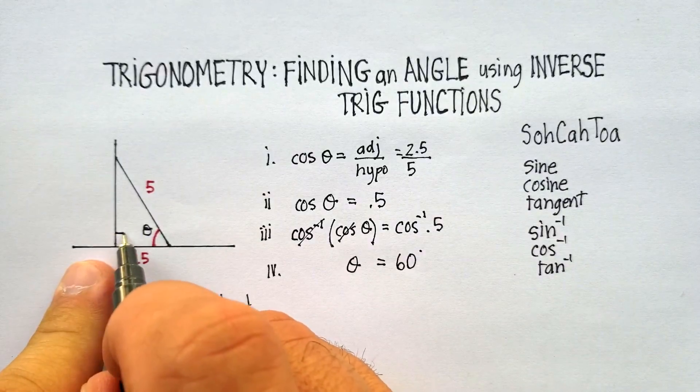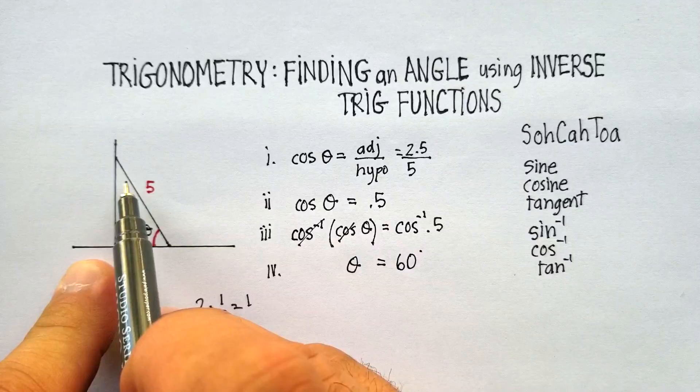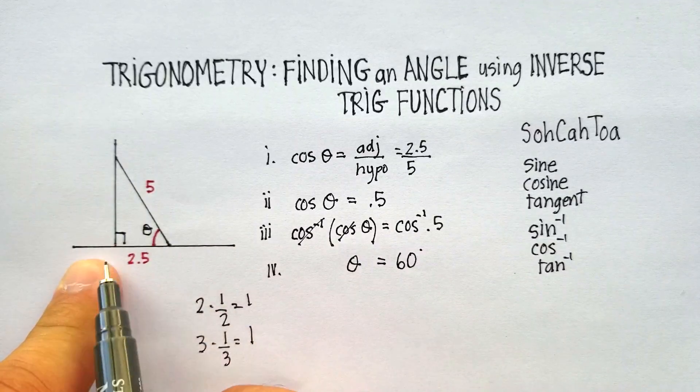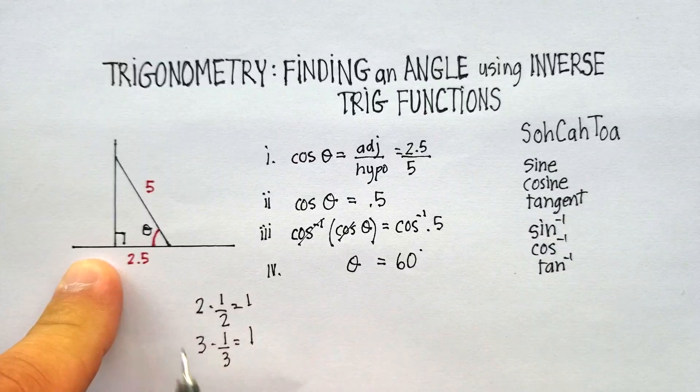So the angle theta will equal 60 degrees. If this is a right triangle, which we know it is, if this is 90, that's 60, that needs to be 30. And you've just now found all the angles in that right triangle. Okay, I hope that was helpful for you.